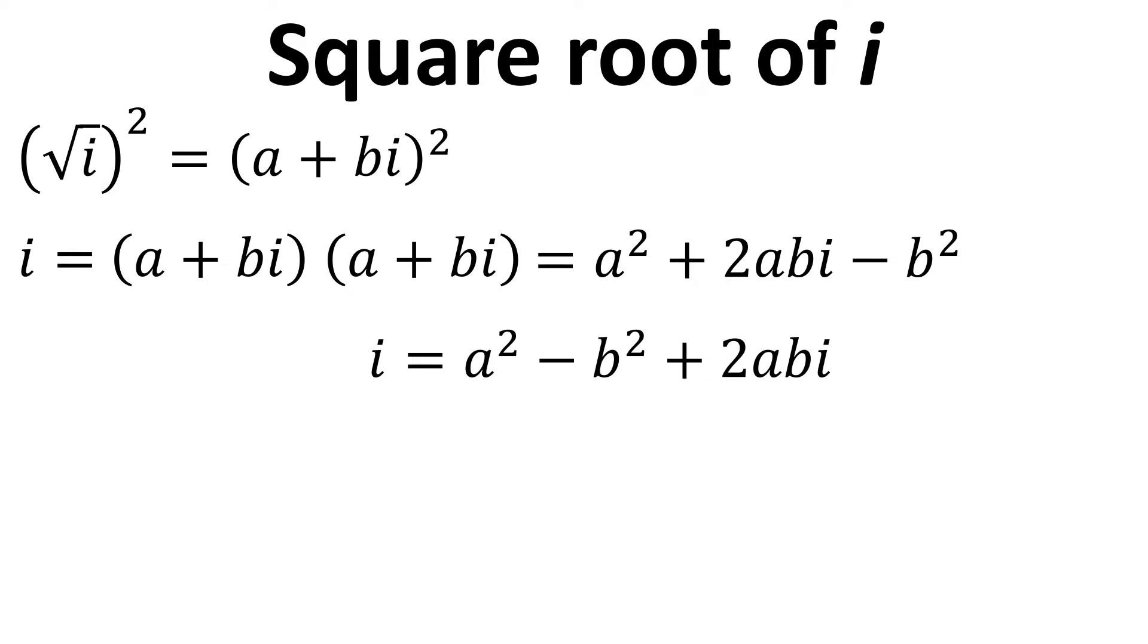So simplifying this and putting it all together this is what we've got. Now I'm going to put in the fact that we've got 0 for the real part of the number here so if we're just dealing with i the complex number form of this is 0 plus i because the real part is 0 and that equals a squared minus b squared plus 2abi.